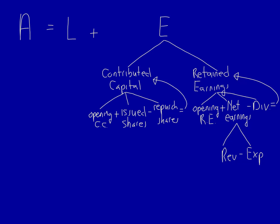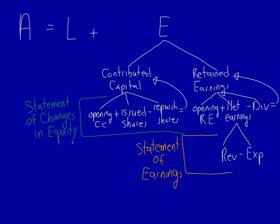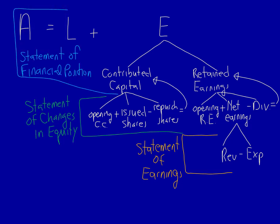We can now see that the elements totally tie in to the financial statements. Revenue minus expenses represents the Statement of Earnings. The movement during the period of contributed capital and retained earnings is equal to the Statement of Changes in Equity. And assets equal to liabilities plus equity — with equity made up of the ending balances for contributed capital and retained earnings — is equal to the Statement of Financial Position. The Statement of Earnings must be completed first so we can calculate net earnings, which is then used in the Statement of Changes in Equity, which in turn calculates the ending balances required for the Statement of Financial Position.